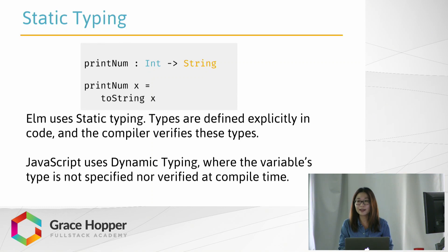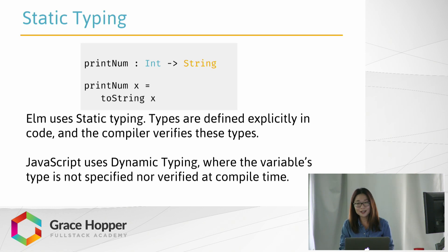Though Elm's compiler can figure out types for us, the language also supports static typing, meaning that above each function we can define the data types we're expecting. For this function print_num, we're expecting to receive an integer as a parameter and return a string value. This might seem like a pain to define above every function, but it can help us catch bugs early and avoid unexpected values, which can happen pretty often with JavaScript. With this static typing system, Elm doesn't even need to have values like undefined and null — they just don't exist in Elm, which can really simplify things.